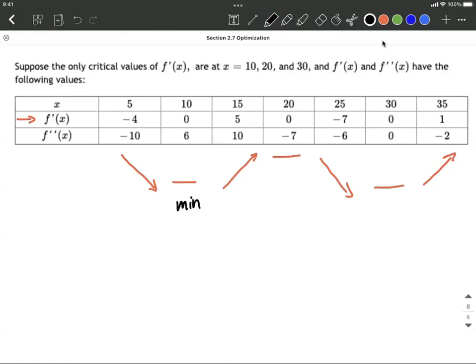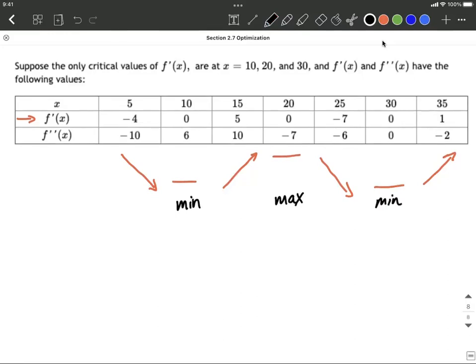When a graph changes from increasing to decreasing, we get a maximum. And finally, when you go from decreasing to increasing again, we get a minimum value.